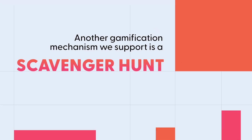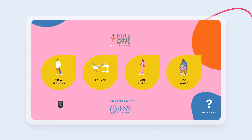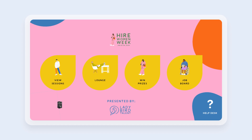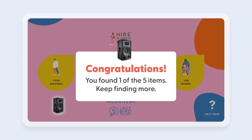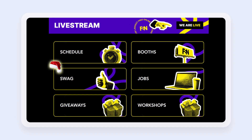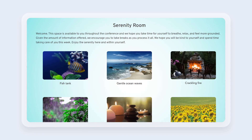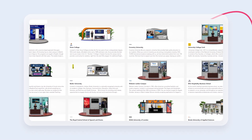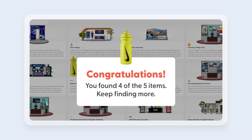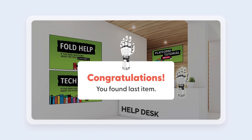Another gamification mechanism we support is a scavenger hunt. You can give users certain clues and ask them to find objects or images hidden across the pages of your event, then reward them based on their discovery. Here's an example of a scavenger hunt — bear in mind that these could be virtually anything you can think of. This will encourage users to explore more areas of the virtual event and register higher engagement.